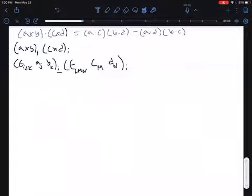Because these are both the same indices, we can combine them together. So then we get Levi-Civita symbol I, J, K, Levi-Civita symbol L, M, N. Then we combine the variables A sub J, B sub K, C sub M, and D sub N.